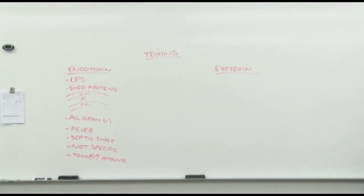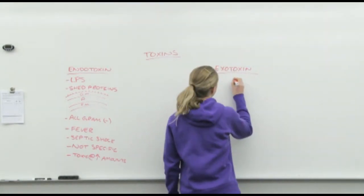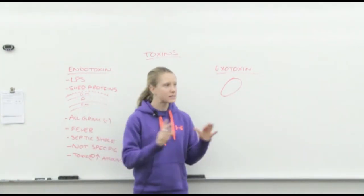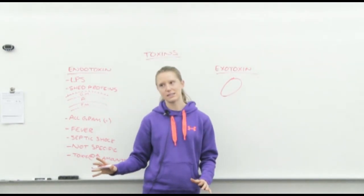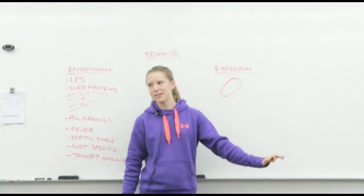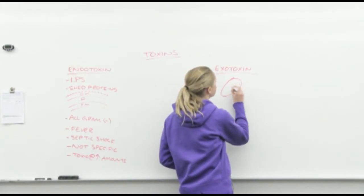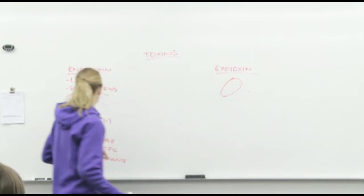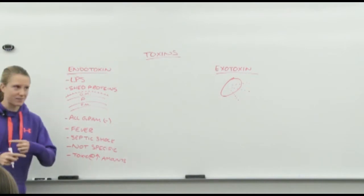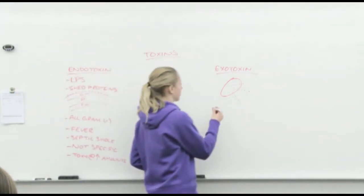Exotoxin. Pretty much everything we wrote over there, we can compare to exotoxins. Is it made of lipopolysaccharides? No. What is it? Secreted proteins. They're not shed, and you can't say it's one kind of protein like lipopolysaccharides. Because unlike endotoxin, where it's the same for every disease, exotoxin is different for the diseases. The exotoxin in one disease will cause one thing; the exotoxin in another disease will cause something completely different. What does that tell you about their specificity? They're very specific. The bacteria is making them and they have a very specific job.